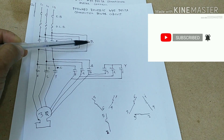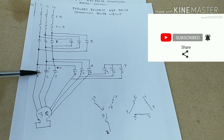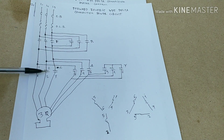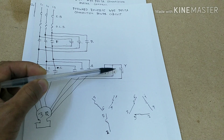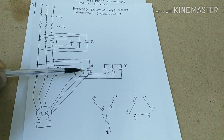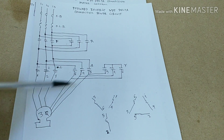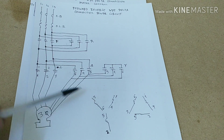If you press reverse, this one will close — the reverse contactor will close, this one will close, and this one will close. After three seconds, this one will open and this one will close also. The motor runs from here.